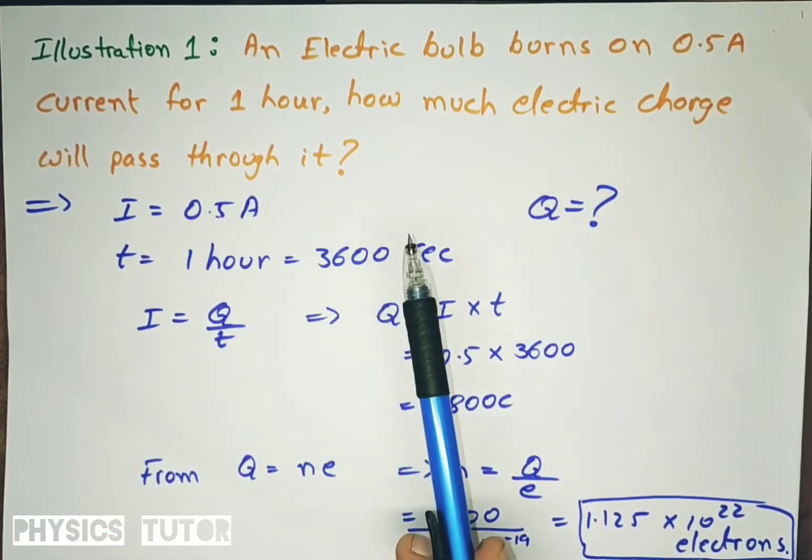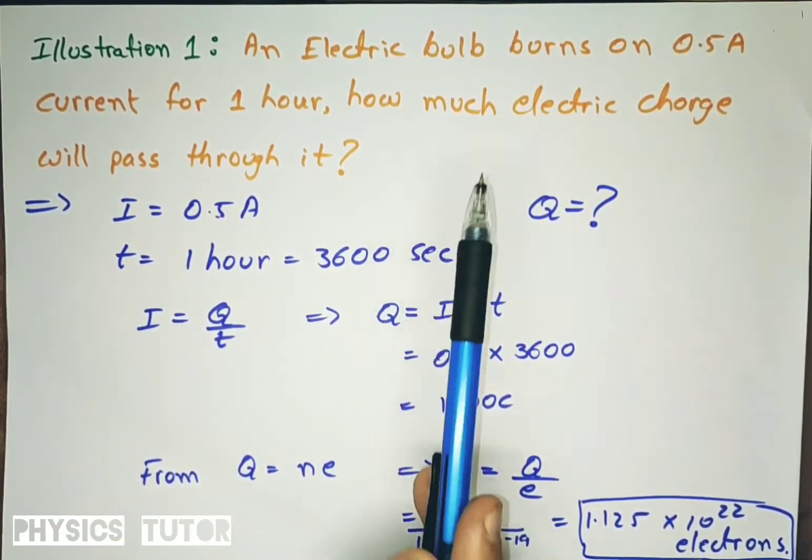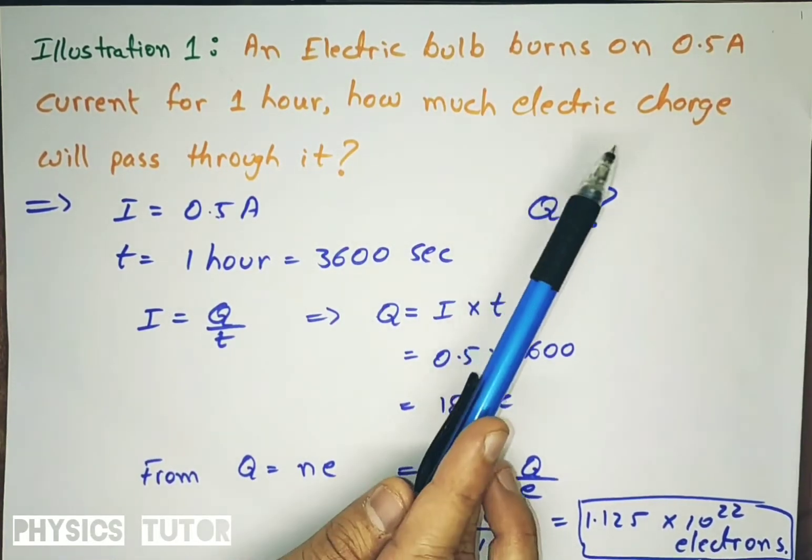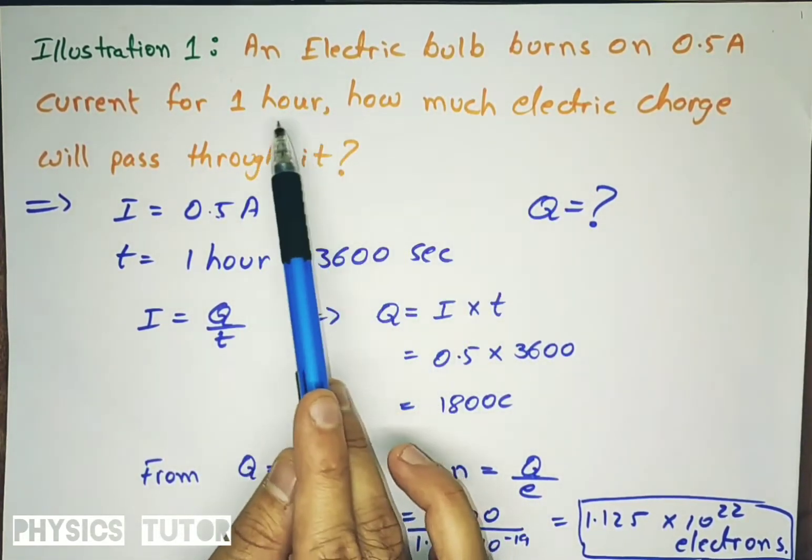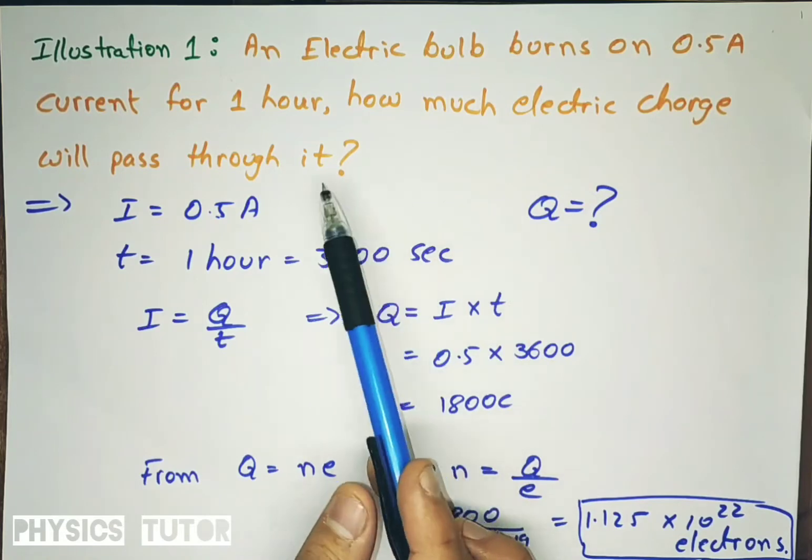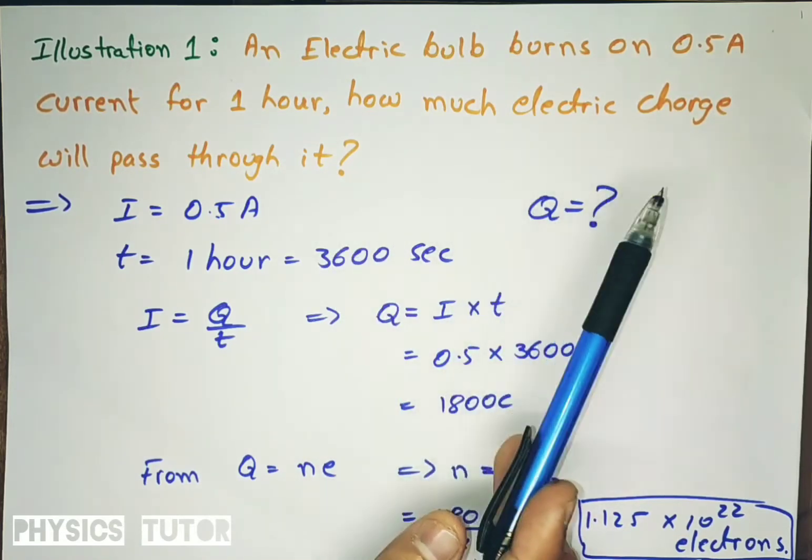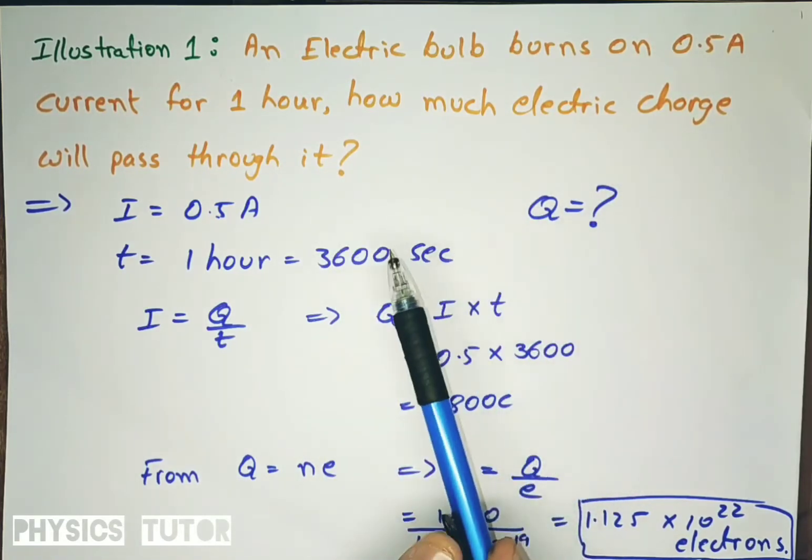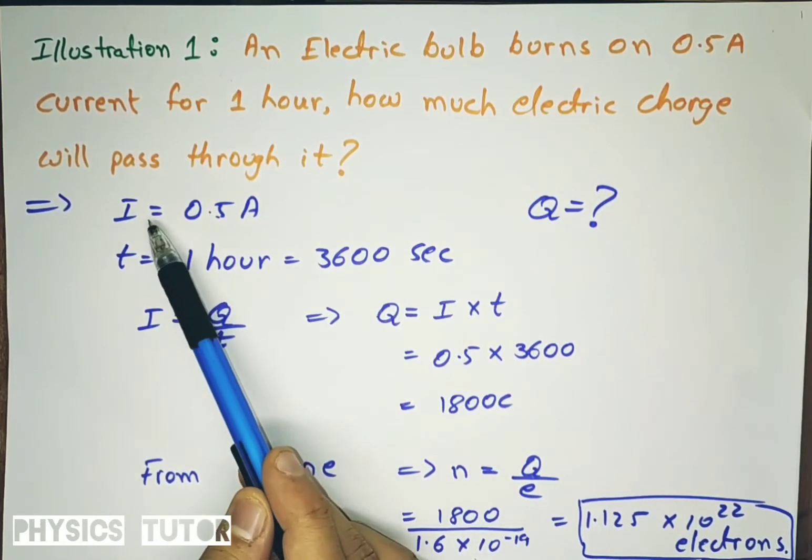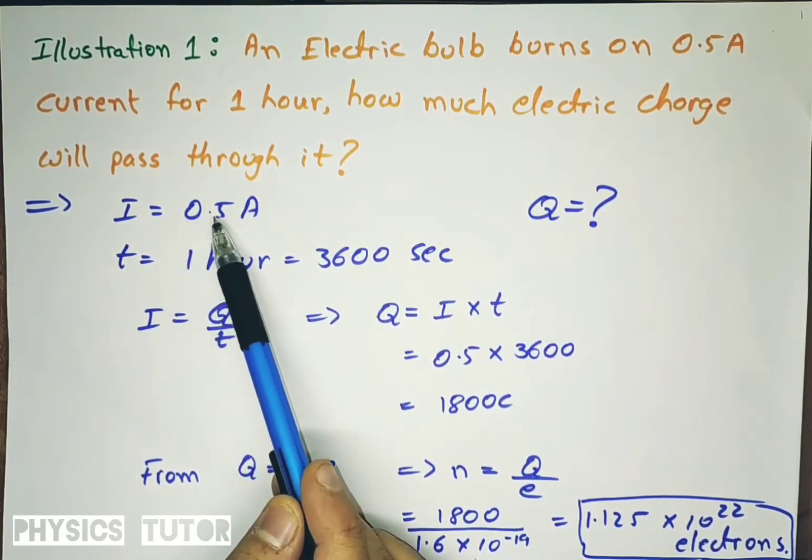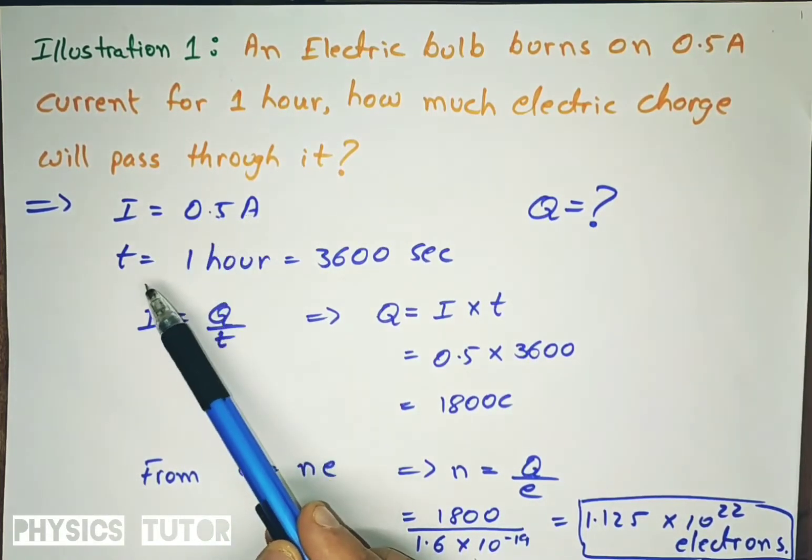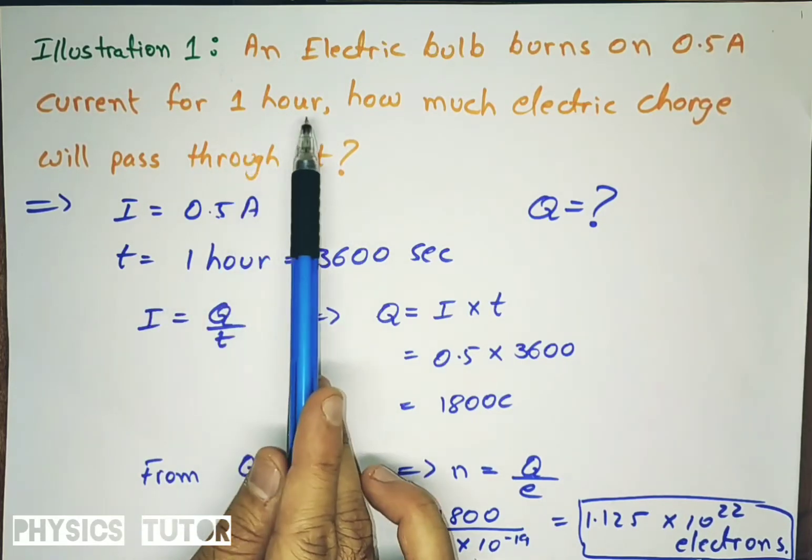How much electric charge will pass through it? Or an electric bulb starts with 0.5 ampere current for 1 hour, how much charge will pass through it? So data given is I, that is 0.5 ampere, then it burns for one hour, that is 3600 seconds.